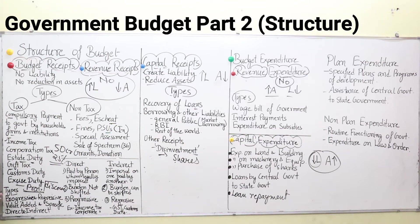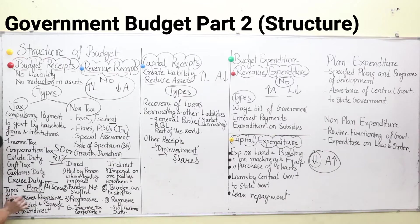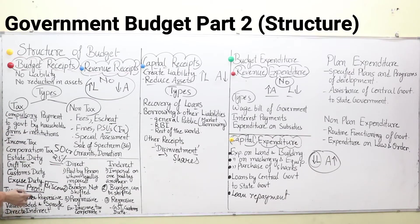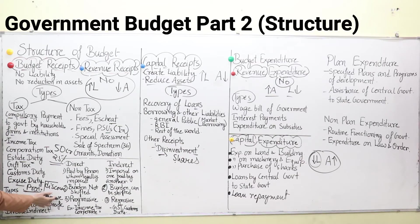Next, we have types of taxes: progressive and regressive; value added and specific; direct and indirect. Progressive taxation — the word comes from 'progress', meaning increasing. When the tax percentage increases with an increase in income, that is known as progressive tax. Regressive means a tax whose burden decreases with increase in income. For example, GST — the burden of GST taxation lies more heavily on poor people than rich people. That is regressive taxation.